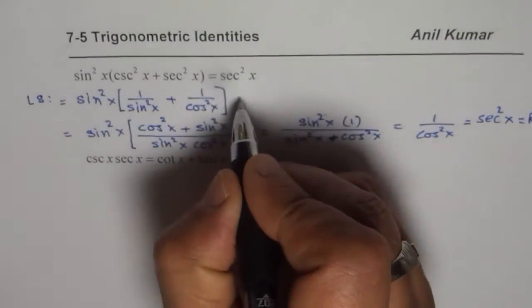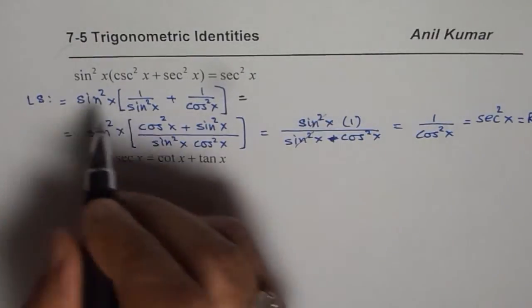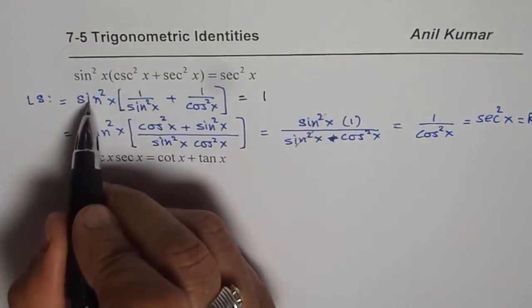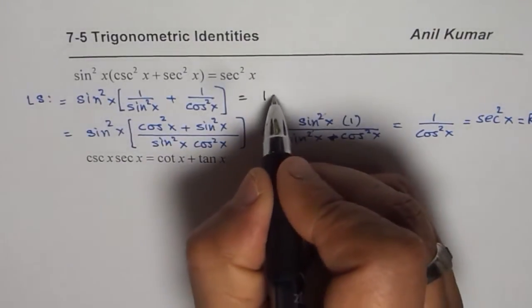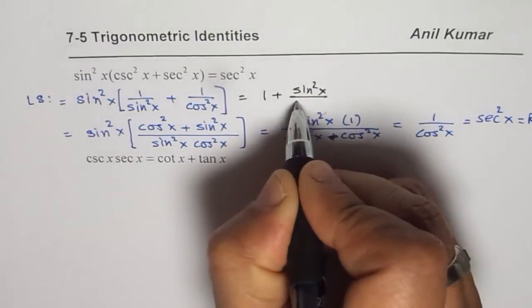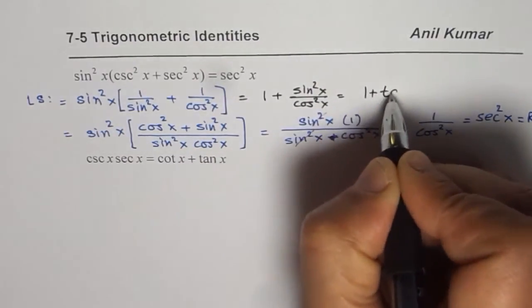The alternate way was you could go straight from here and open the bracket. If you open the bracket you get sin²x divided by sin²x which is 1, and then sin²x over cos²x. So you get 1 + tan²x.